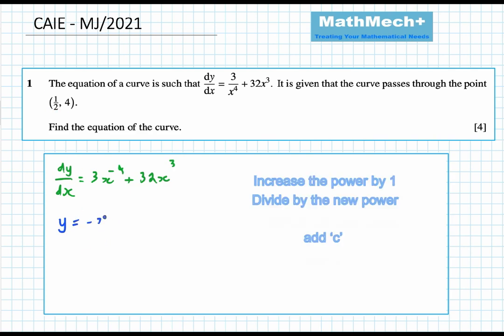See here, minus four plus one is equal to minus three. Minus three divide by three is minus one. Be careful with negative powers. And then in the second part, second term, three plus one is equal to four.